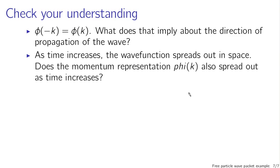To check your understanding, here are a couple of questions. I've gotten sloppy with my notation, this is phi of k, the Greek letter, not PHI of k. But first question, the wave function represented in terms of k is symmetric. phi of minus k is phi of k. What does that imply about the direction of propagation of the particle, or of the wave function? And second of all, you have some spreading out in space. Does the representation of phi, or does the representation of the wave function in terms of k, which is related to the momentum, it's often called momentum representation, also spread out as time increases?